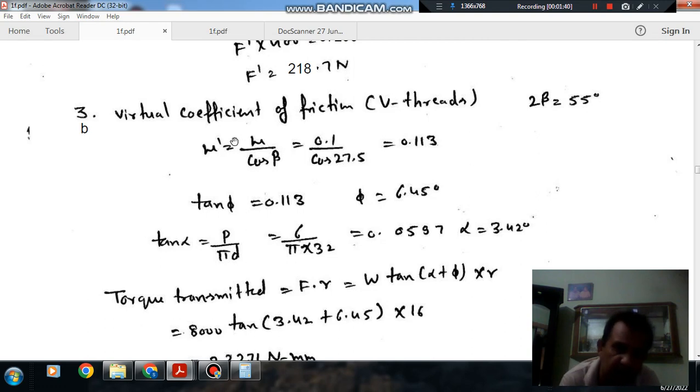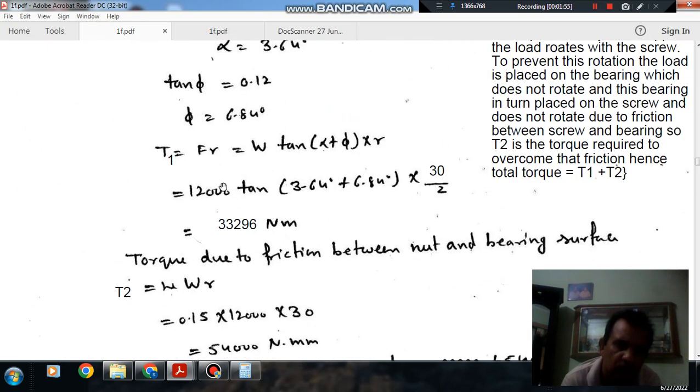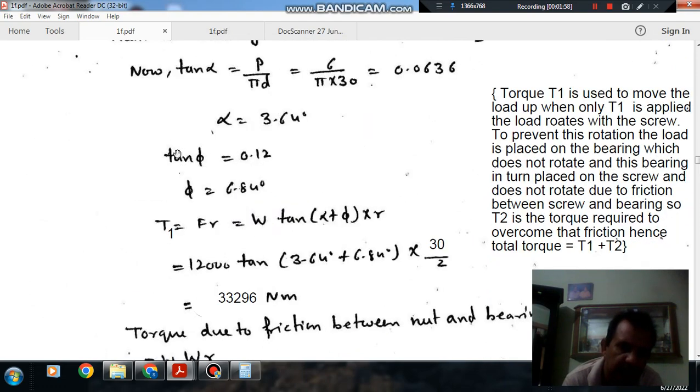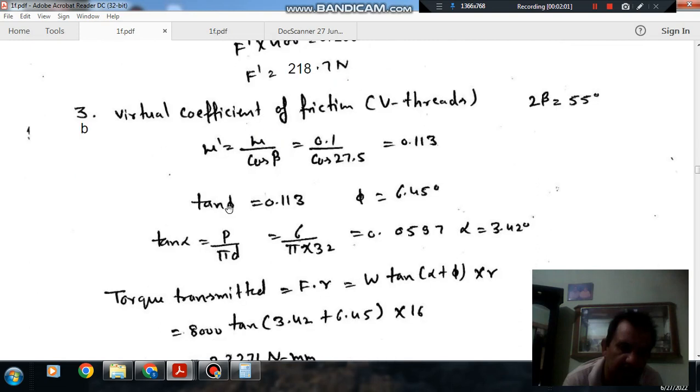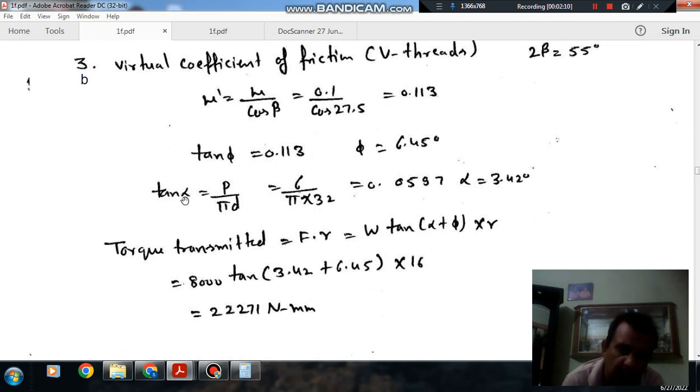Now we will take this mu dash as the coefficient of friction between nut and bolt. So now this is your coefficient of friction, so friction angle comes out as tangent phi is 0.113, so phi friction angle comes out as 6.45 degrees.